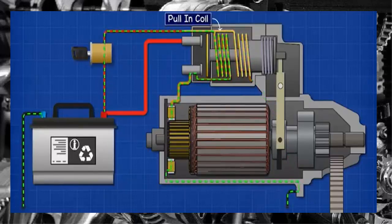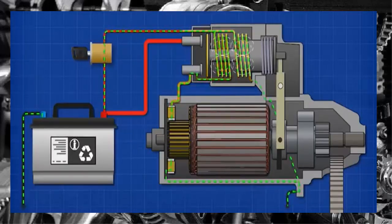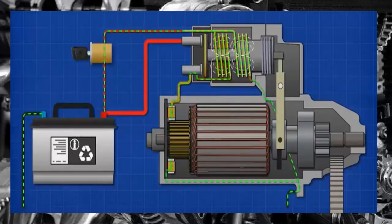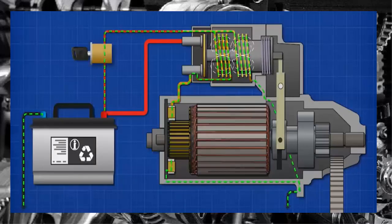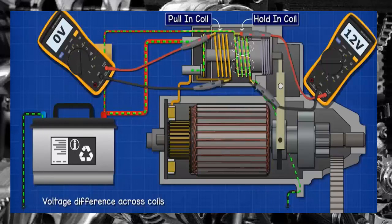The pulling coil is connected to the main output terminal. Both coils are energized to create a strong magnetic field. This pulls the piston back, and as the contactor plate connects across the main terminals, both ends of the pulling coil will become the same voltage.